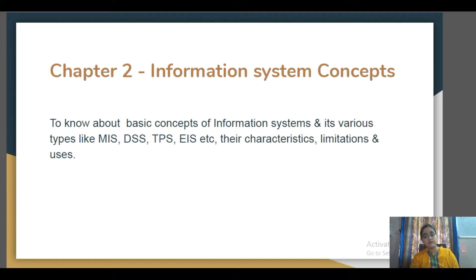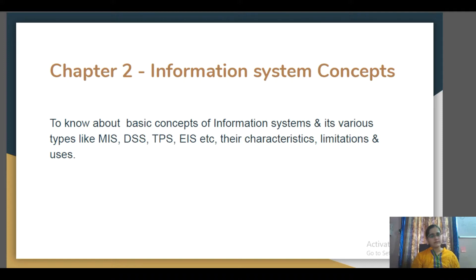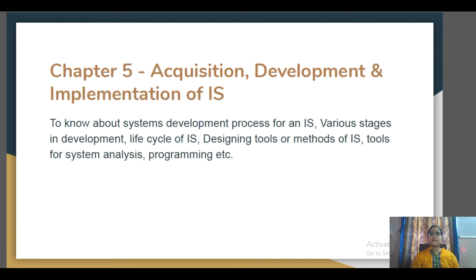What are the variety or different types of information system available, and what are the characteristics and limitations — so it forms a base of our paper. Then comes Chapter 5. Chapter 5 deals with Acquisition, Development and Implementation of information systems.